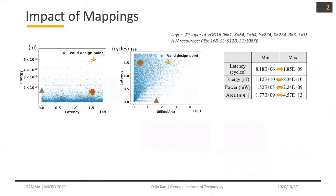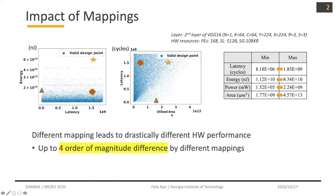Now let's look at how mapping matters. You are looking at the example of running the second layer of VGG16 under the same hardware resource constraint, and we just give them different mapping strategies. We look at their energy, latency, and area performance. We can see that just by using different mapping strategies, we can have up to four orders of magnitude difference in hardware performance.